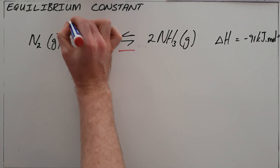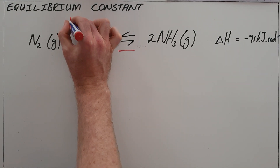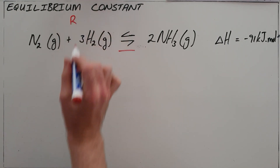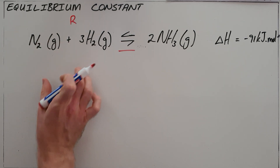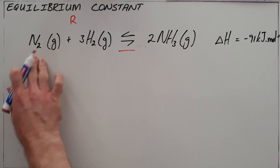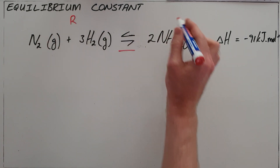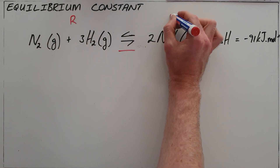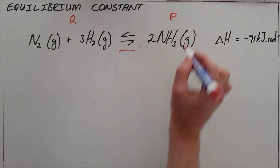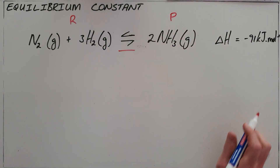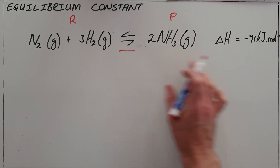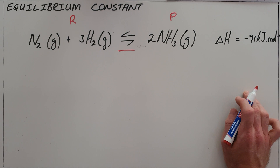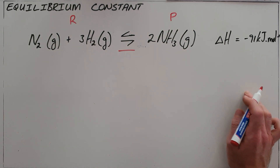We know that our traditional chemical reaction is one in which our reactants, in this case nitrogen and hydrogen, are reacting to form products, in this case ammonia, in what we know here is the Haber process, an important process in the fertilizer industry.